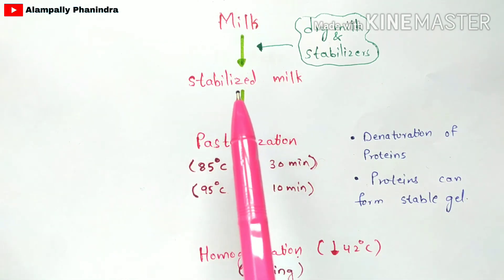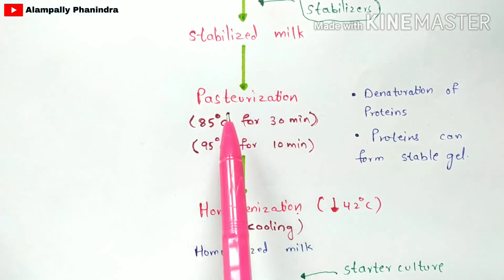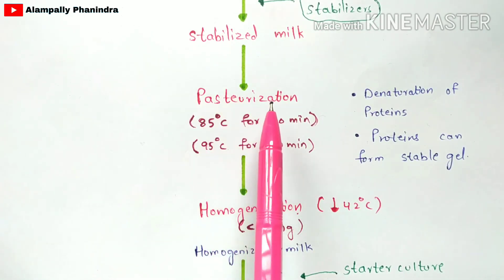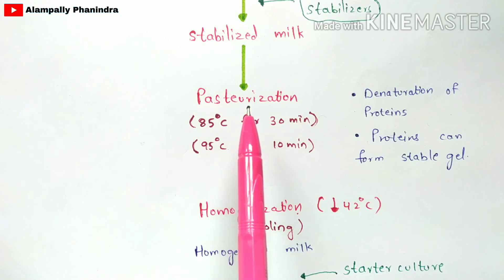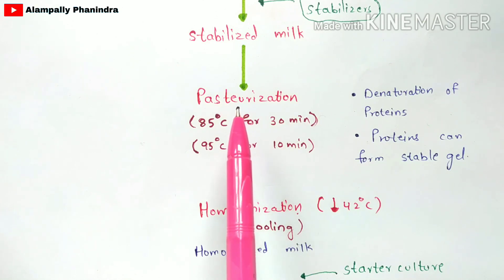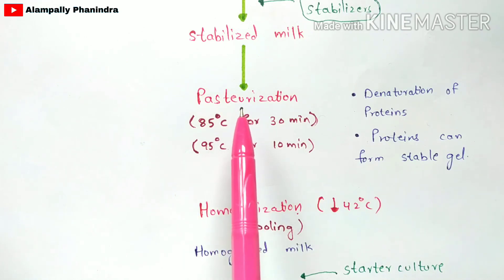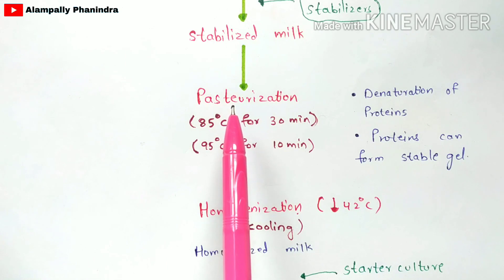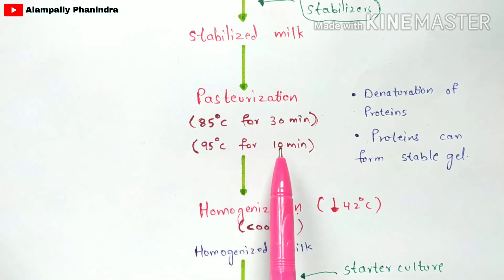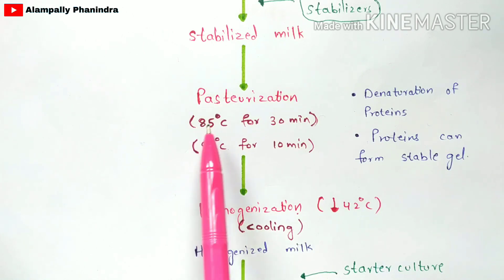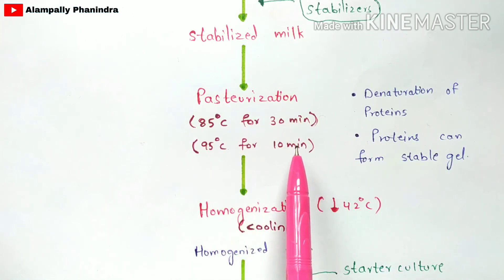After the milk is stabilized, we perform pasteurization. Pasteurization is used to kill the harmful microorganisms present in the milk. Pasteurization is a technique where heat is applied — either at 85 degrees Celsius for 30 minutes, or at 95 degrees Celsius for 10 minutes. You can apply low temperature for more time, or high temperature for less time.